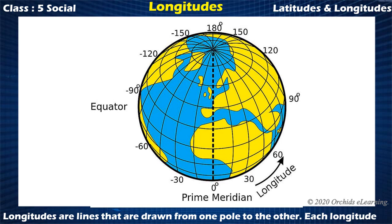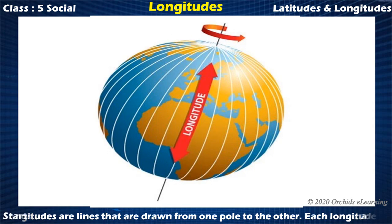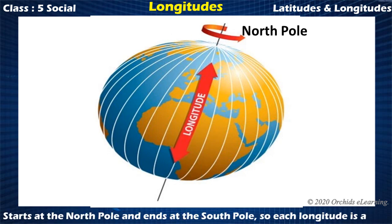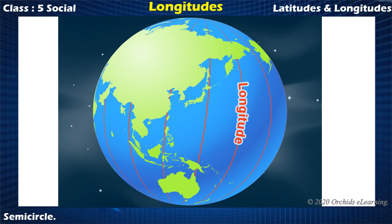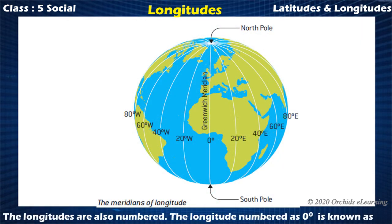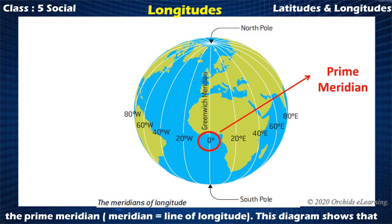Longitudes are lines that are drawn from one pole to the other. Each longitude starts at the North Pole and ends at the South Pole, so each longitude is a semi-circle. The longitudes are also numbered. The longitude numbered as zero degrees is known as the prime meridian. Meridian means line of longitude.